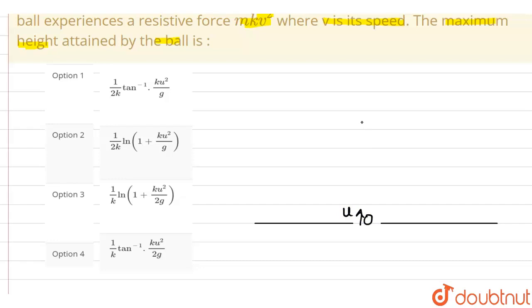After a certain point, let's say the ball reaches here and it has a velocity v upwards.